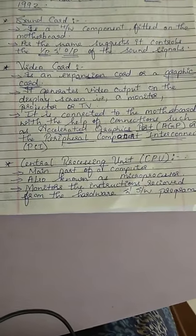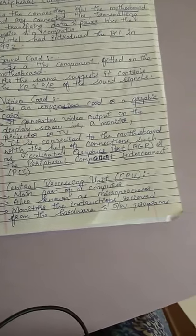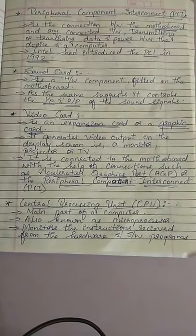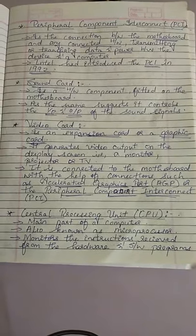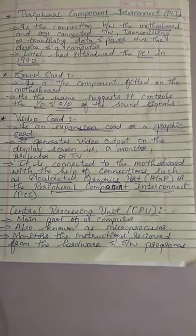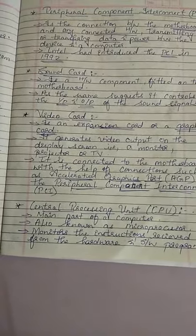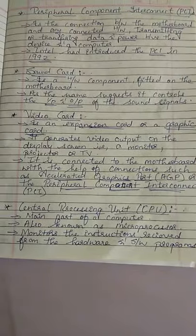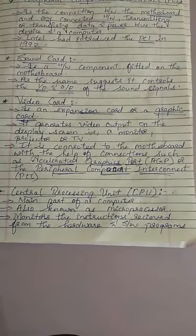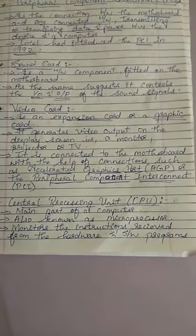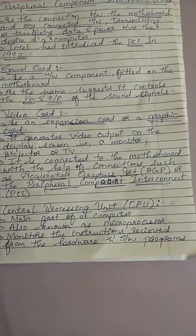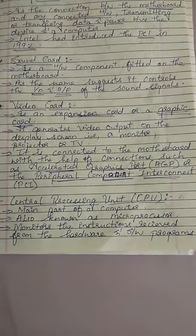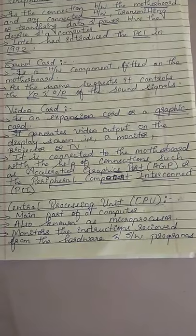Next comes the Central Processing Unit, that is the CPU. It is considered as the main part of a computer. In your CPU, you have a microprocessor — it is also known as a microprocessor. It monitors the instructions received from the hardware and software programs.